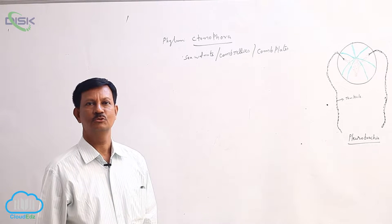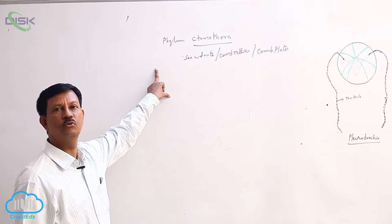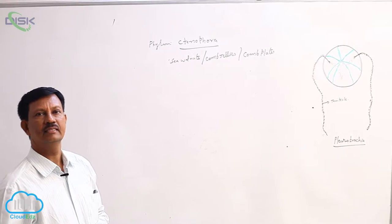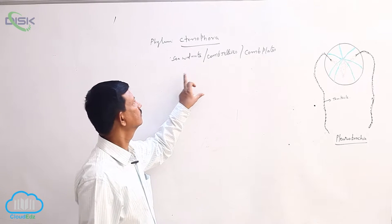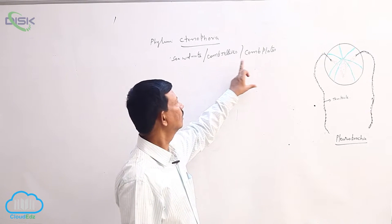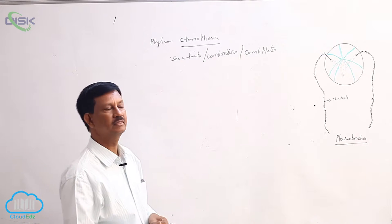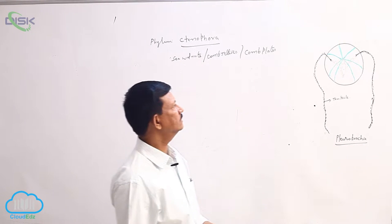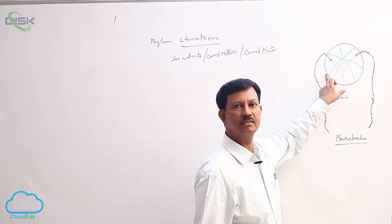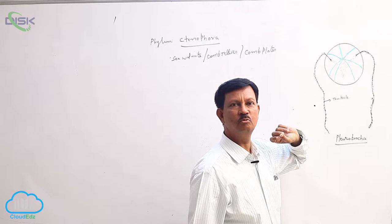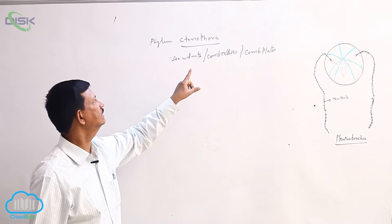Good morning. Today's lesson is Phylum Ctenophora. These animals are commonly known as sea walnuts, comb jellies, or comb plates. Comb plates are present on the body which help in locomotion. Due to the presence of comb plates, these are commonly known as the comb jellies.